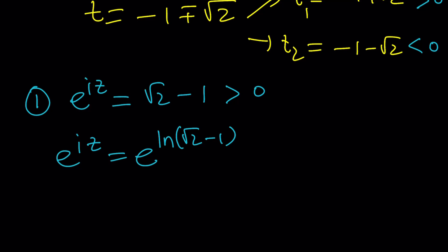e to the iz, we can write as e to the power ln root 2 minus 1, because any number a is e to the power ln of that number. Is that true for negative numbers? That's a good question. Obviously, negatives will make a difference, a huge difference, or a pi difference.